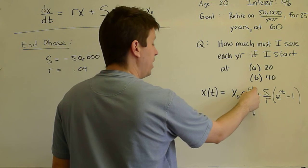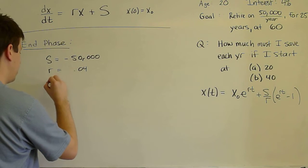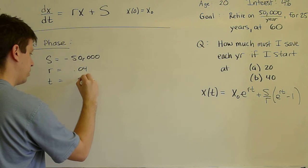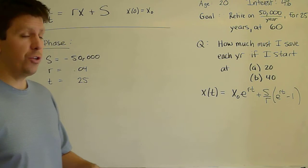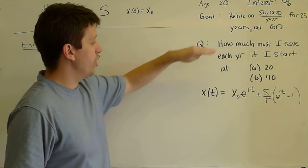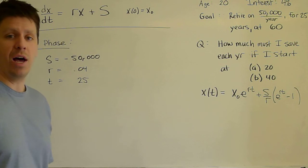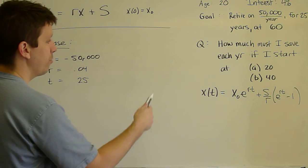T is given. T is that we want this to last for 25 years. And the goal is to die broke so that if we call age 60, T = 0. Then at T = 25, we want the balance X to be 0. So the only thing that we don't know is X₀.